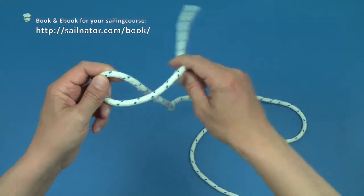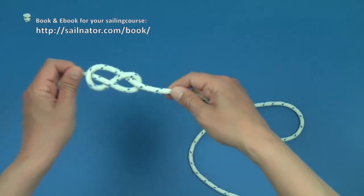Again I tie a figure 8 knot in one end of the line, which marks the moored part of it.